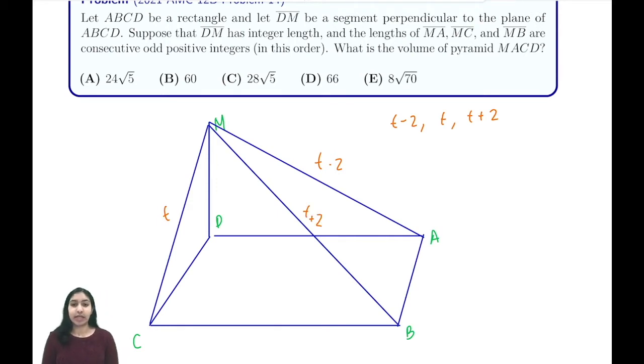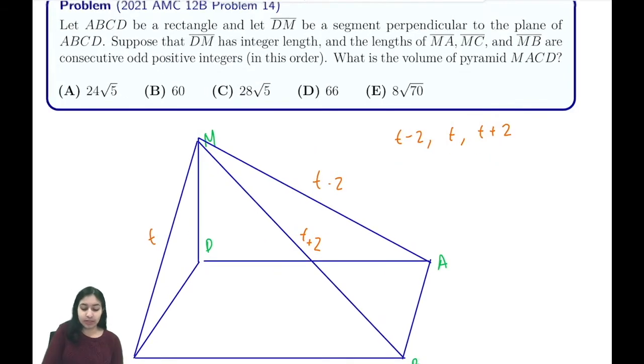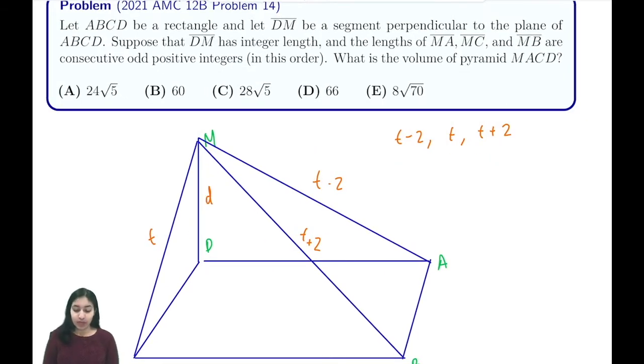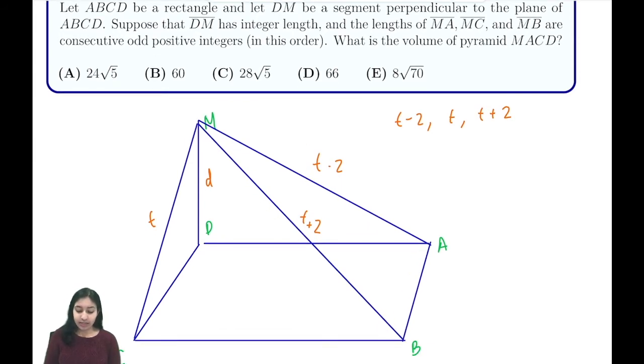So we have these lengths now, and we also know that MD is some integer. Let this be d, and let's let side AD be a, and let's let side DC be b. You know that DB is going to be the square root of a² + b² because this is a rectangle and corners are 90 degrees.